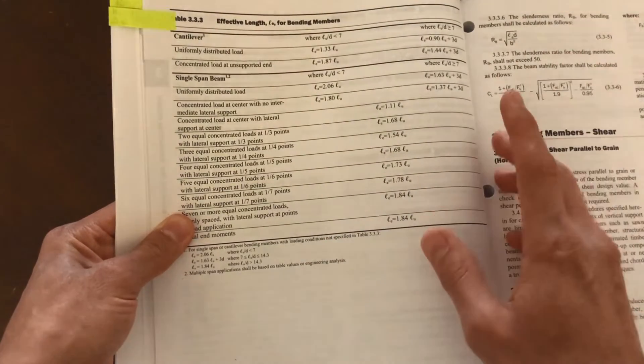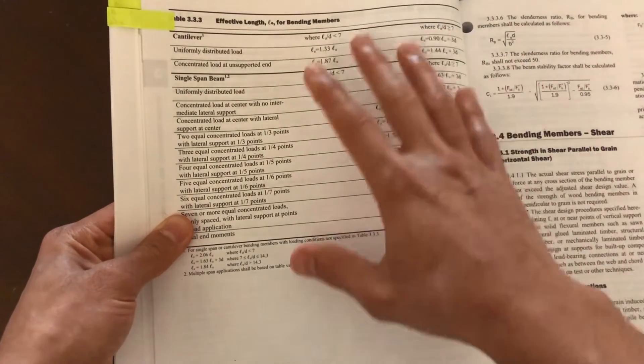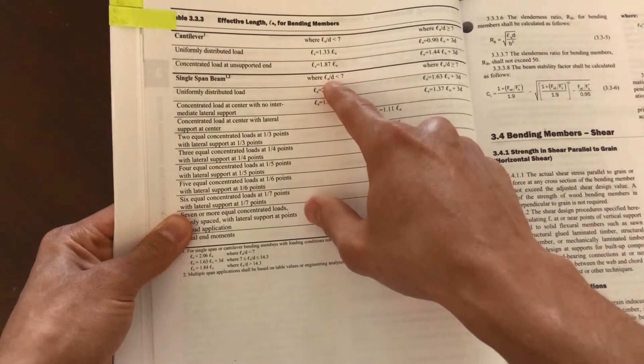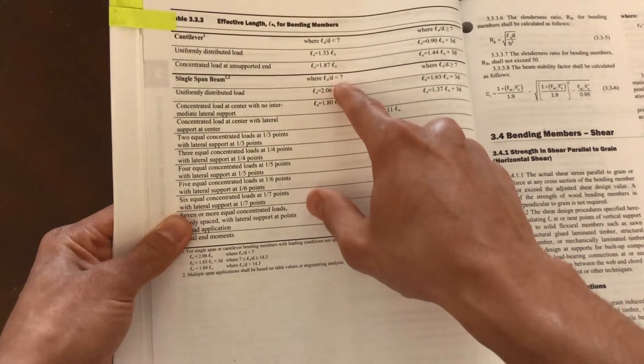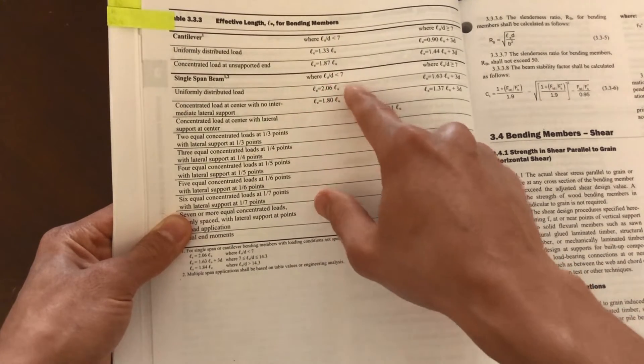The effective length is going to be based on this table here. In our case, we're going to calculate L U, the span length over D, or the unbraced length is L U. See if it's less than seven.